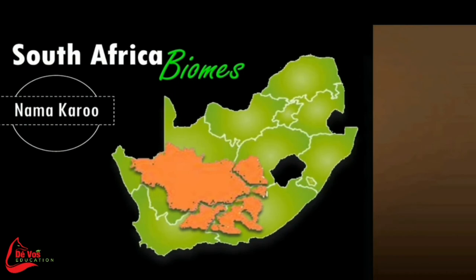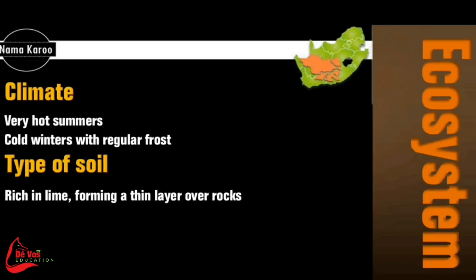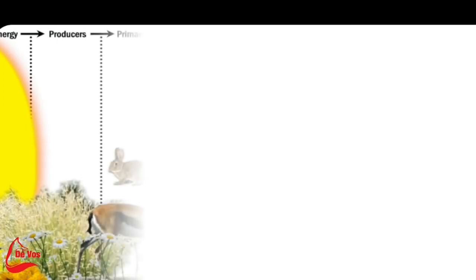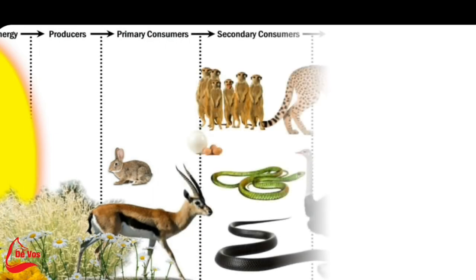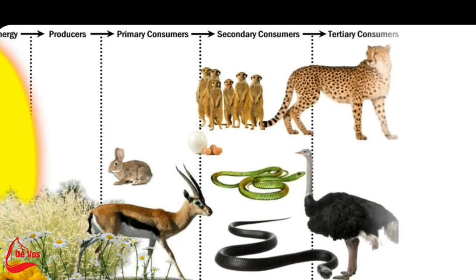The Nama Karoo extends over the wide central plateau of South Africa. It is an area of transition between the Cape Flora in the south and the tropical savannah in the north. It has a warm, dry, semi-desert climate with sandy soil that has little nutrition. The soil is rich in lime and forms a thin layer over the rocks. The plants are mostly grasses and small shrubs such as wild gentian, sweet thorn and the blue Karoo daisy. Sheep farming is the main agricultural activity. Other animals occurring in the Nama Karoo include bat-eared foxes, ostriches, spring hares, tortoises and the endemic riverine rabbit. The endemic or near-endemic bird species includes Sclater's lark.